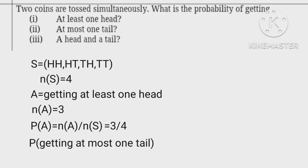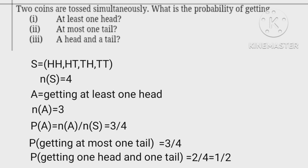Similarly, probability of getting at least 1 tail equals 3 upon 4. Probability of getting 1 head and 1 tail equals 2 upon 4 equals 1 half.